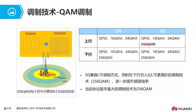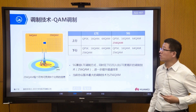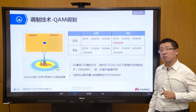256QAM requires better channel conditions because in its constellation diagram, the symbols are very densely packed — the spatial distance between them is very small. Even slight interference can cause the network to confuse two adjacent symbols. Therefore, 256QAM can only be used when channel conditions are good; otherwise, lower-order modulation must be used to ensure reliability. These higher-order modulation methods available in 5G effectively enhance the achievable data rate.